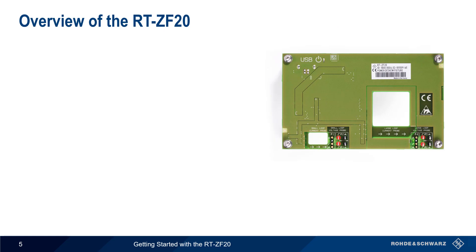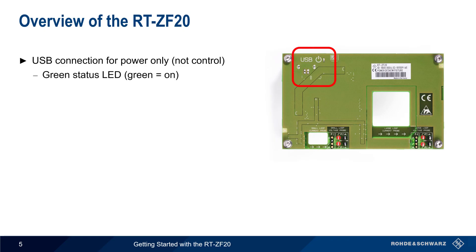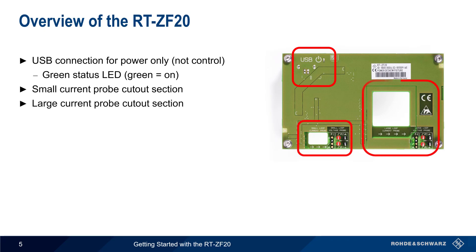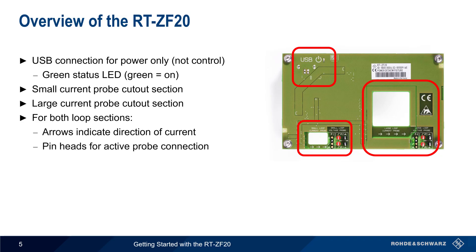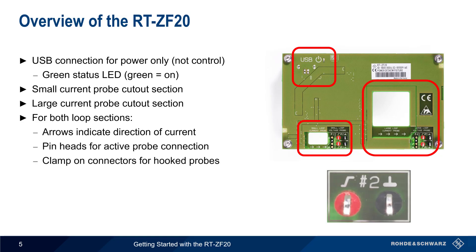Let's start with a brief overview of the RTZF20. Power is provided over a USB connection, and a small green LED will illuminate when the board is powered on. The ZF20 has two current probe loop sections, one for smaller current probes and one for larger current probes. Both loop sections have arrows indicating the direction of current. Each section also has both pin headers for active probes and clamp-on connectors for standard hooked passive probes.